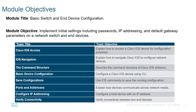In the first module we introduced what a network is and the components that make up a network — the end devices, the network devices, and the media. When they are purchased, they generally come with some configurations. But for particular networks, they will require specific information and instructions. That is our module objective: to implement the initial settings, including passwords, IP addressing, and the default gateway.